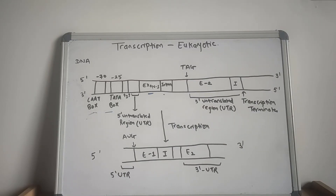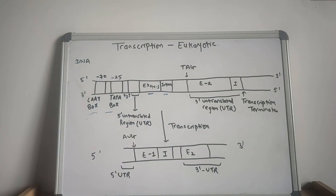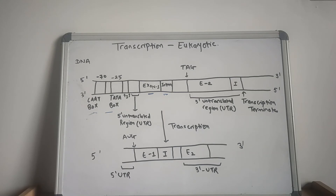Now let us discuss the transcription of eukaryotic genes. In eukaryotes, most genes are composed of coding segments known as exons, which are interrupted by non-coding segments known as introns. Both exons and introns are transcribed in the nucleus, but introns are removed during the processing of the RNA molecule in the nucleus. In eukaryotes, all mRNA is monocistronic and the mature mRNA is translated in the cytoplasm.